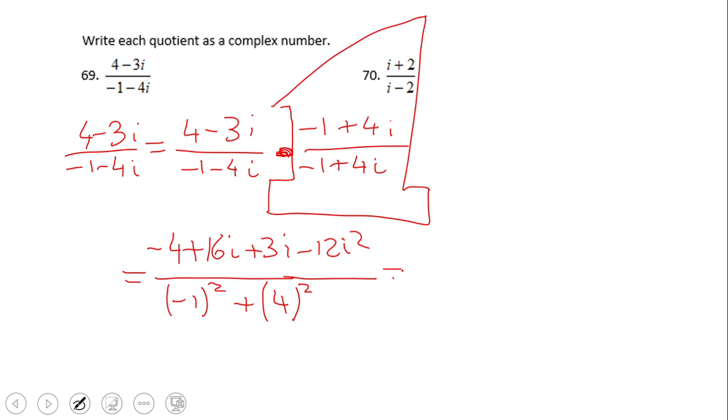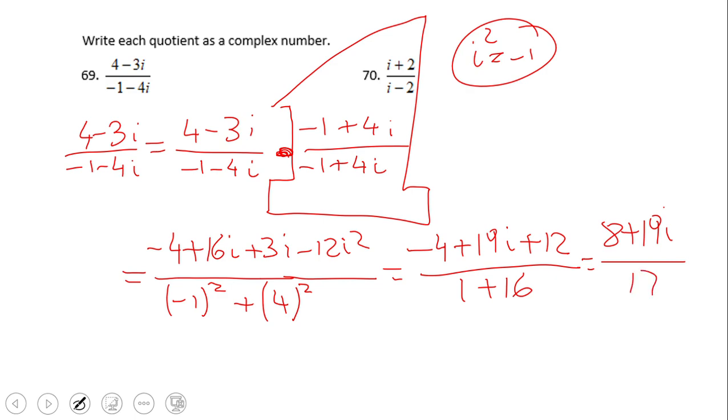So for the top, we're going to end up with negative 4 plus 19i plus 12, right? Because i squared is negative 1, don't forget that. i squared equals negative 1. Now on the bottom, we get 1 plus 16. So we end up with 8 plus 19i over 17. The final answer will be always in this form.